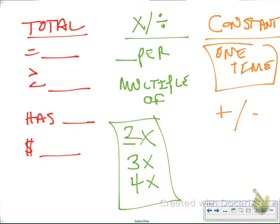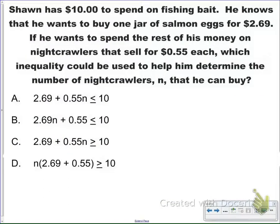So having said that, I want to look at an example. We have Sean has $10 to spend on fishing bait. He knows that he wants to buy one jar of salmon eggs for $2.69. If he wants to spend the rest of his money on nightcrawlers that sell for $0.55 each, which inequality could be used to help him determine the number of nightcrawlers that he can buy?